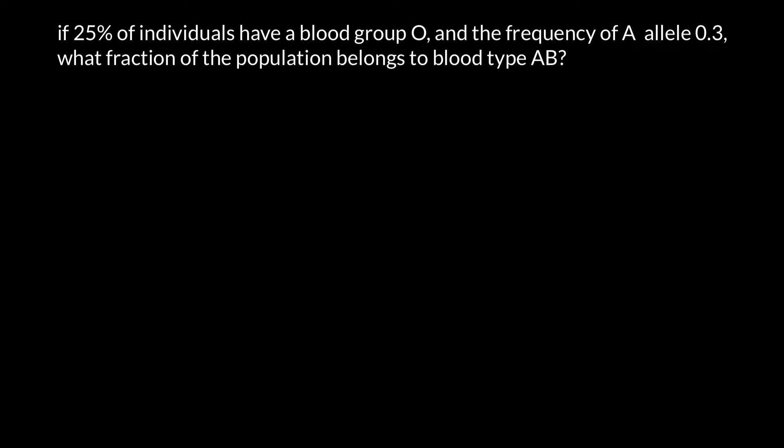Hello, and welcome to Nikolai's Genetics Lessons. Today's problem I got from one of my subscribers. Here's the problem: if 25% of individuals have blood group O, and the frequency of the A allele is 0.3, what fraction of the population belong to blood type AB?